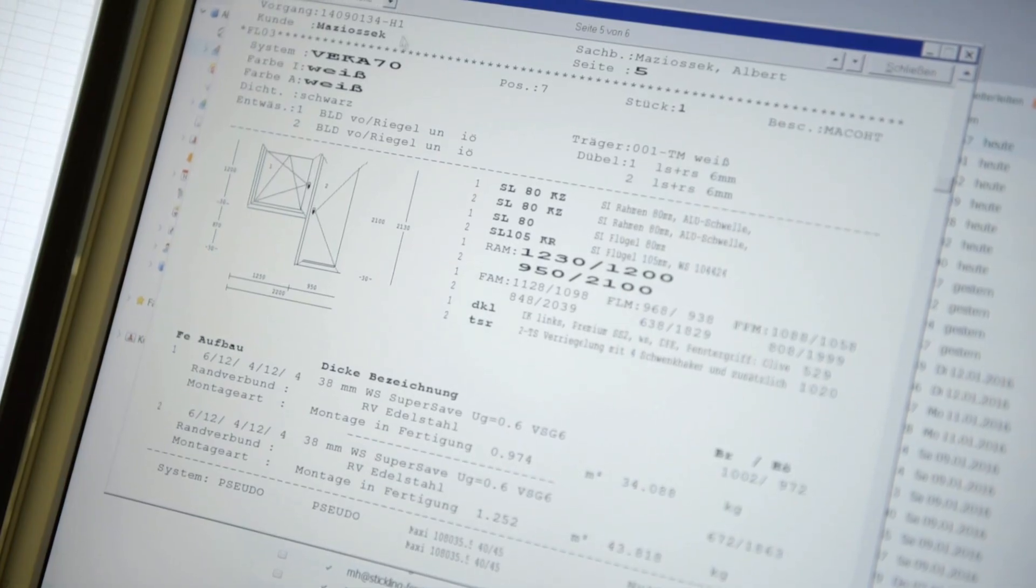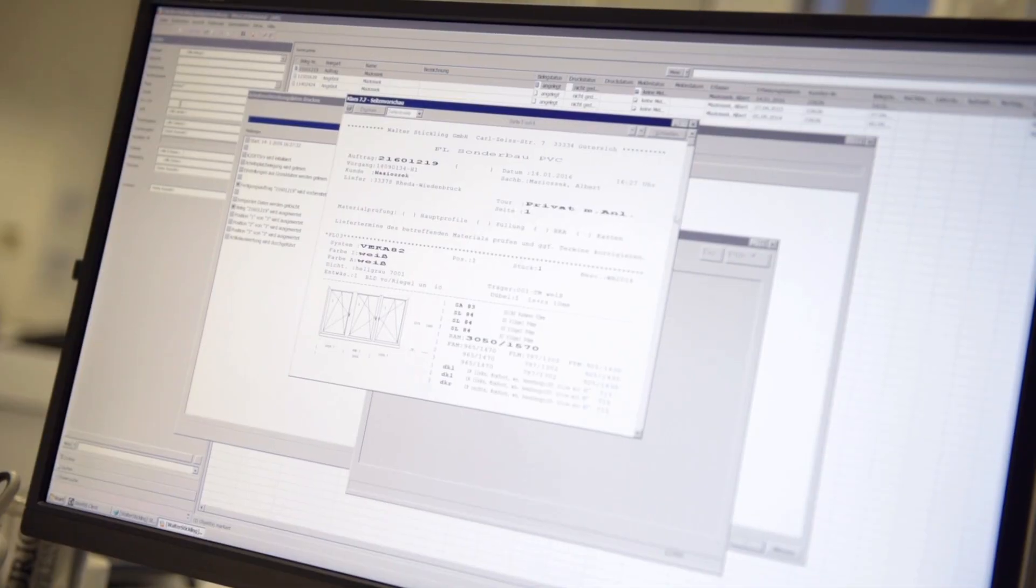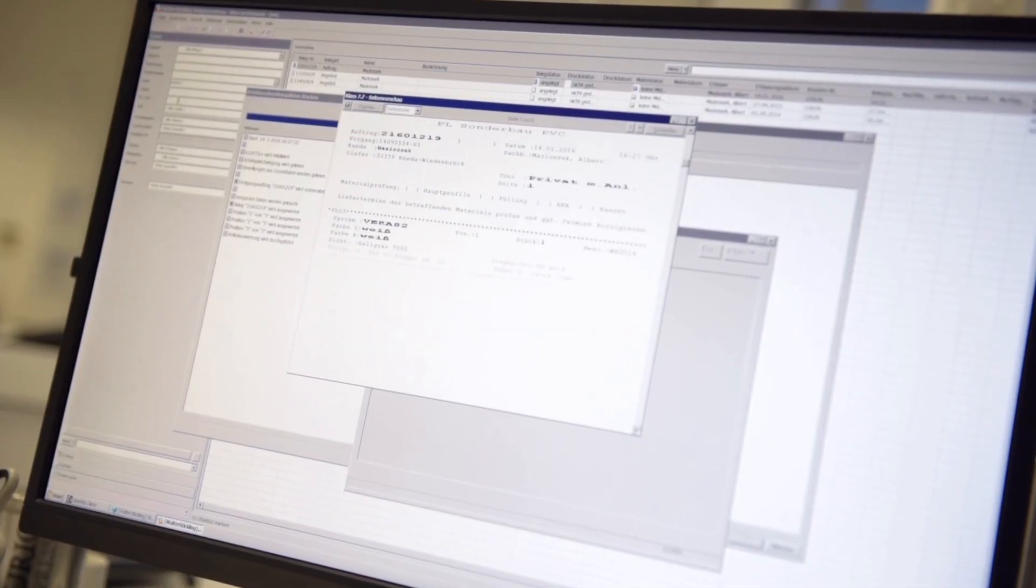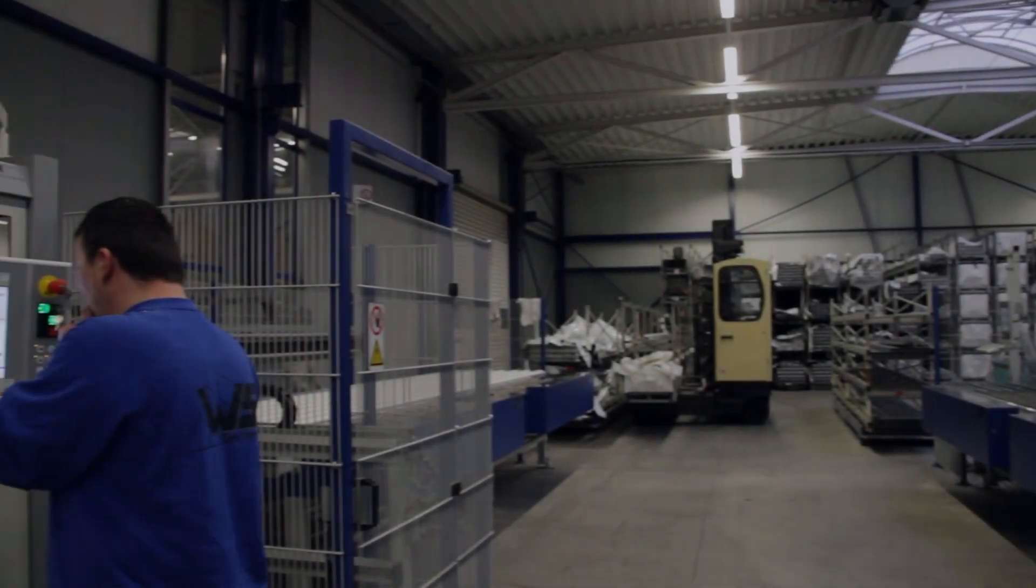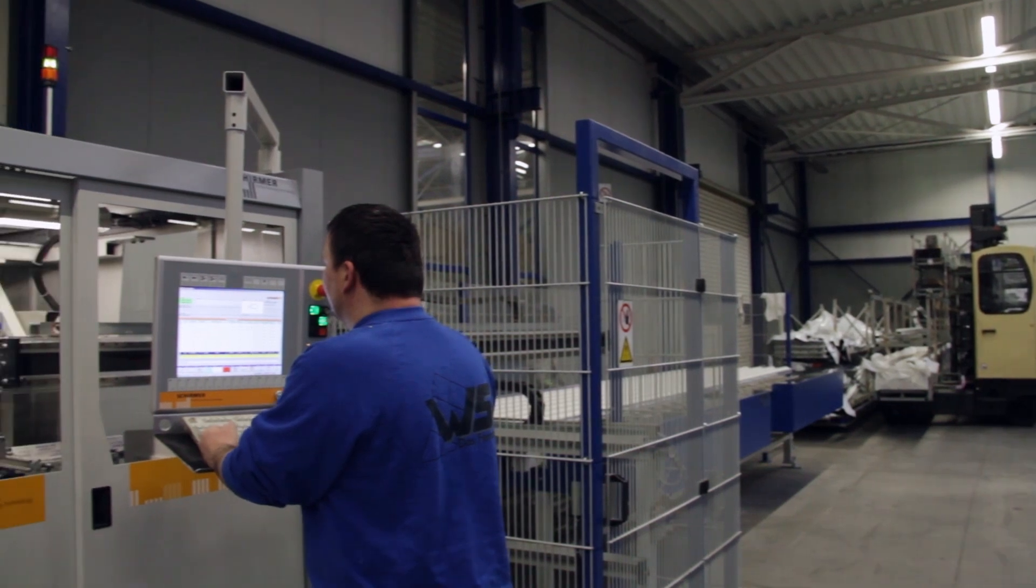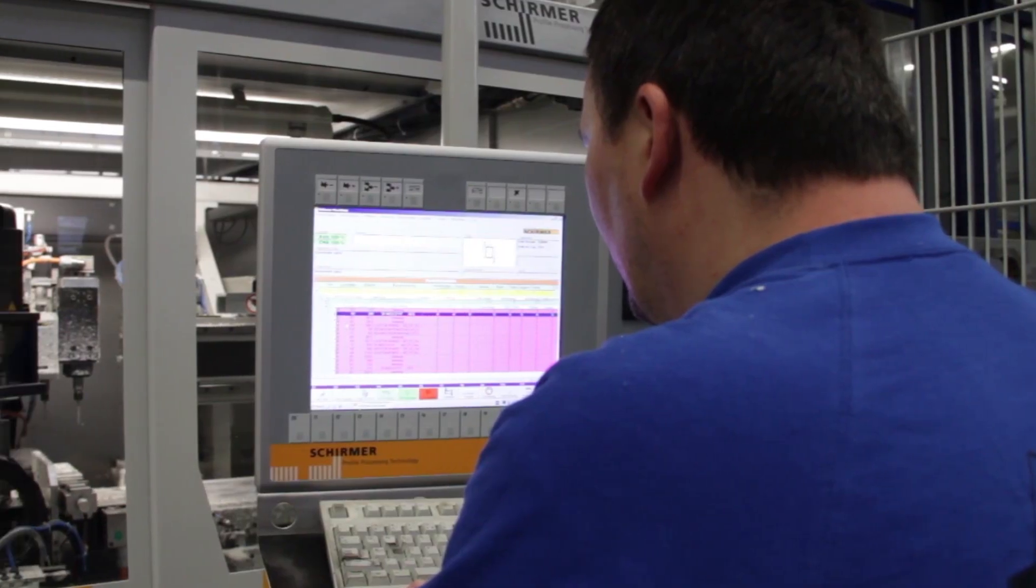Production documents and paper lists are a thing of the past with us. All data is transferred from the class program to production with a click. This data has already been optimized for our machines.